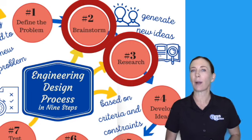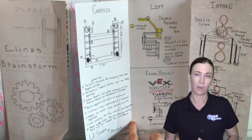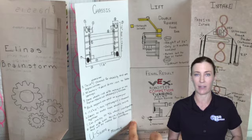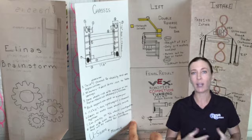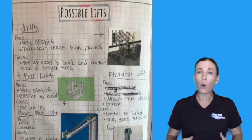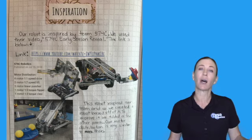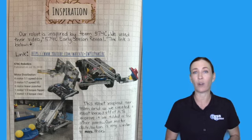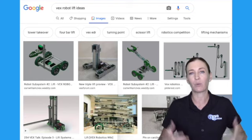Steps two and three are brainstorm and research — sometimes these steps can be combined. When you brainstorm, it is very important that you list all of your ideas. No ideas are bad ideas, and these ideas come from your head — not from looking online, which is what we consider research. You may collaboratively or independently brainstorm and research, but eventually you'll need to come together with your team and share these ideas. Make sure you do your brainstorm first, because once you go online, all those great ideas vanish from your head and all you can see is what's presented online.